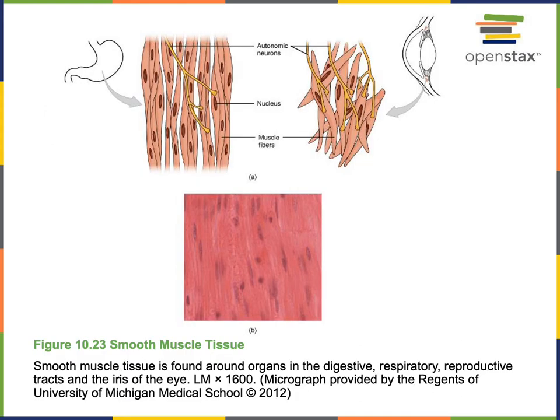Smooth muscle tissue consists of muscle fibers that have a spindle shape with tapered ends and a centrally located nucleus. There are no striations in smooth muscle, and this is why we call it smooth muscle. Smooth muscle is found in the walls of hollow organs. For example, in the digestive tract, the stomach and intestines contain smooth muscles that can contract in order to help with digestion and to propel the contents through the digestive tract.